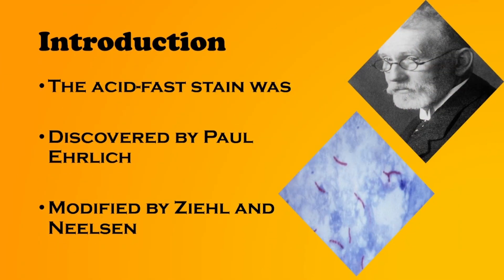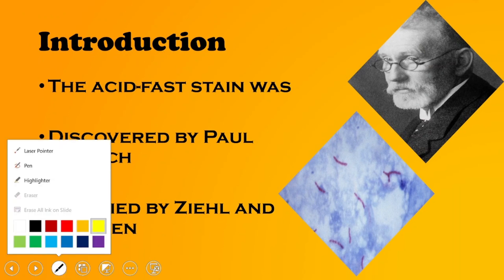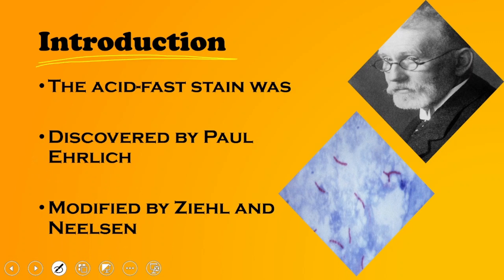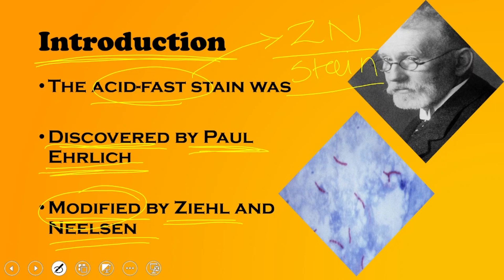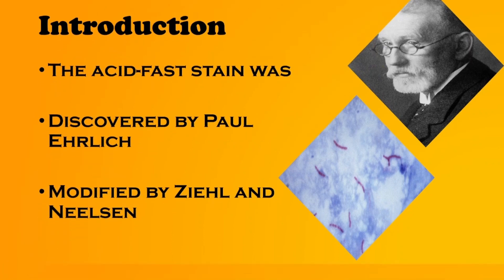For the introduction, while gram staining was discovered by Hans Christian Gram, the acid-fast stain was discovered by Paul Ehrlich and later modified by Ziehl and Nielsen. That is why it is also called the ZN stain — named after Ziehl and Nielsen who performed the modification. Never forget this basic introductory point.